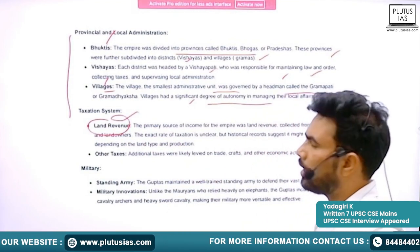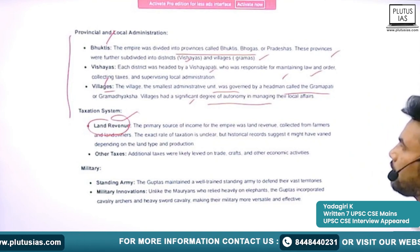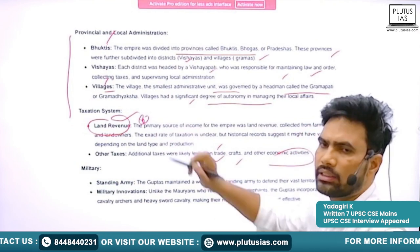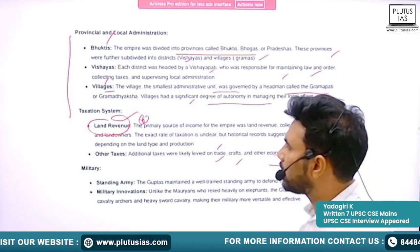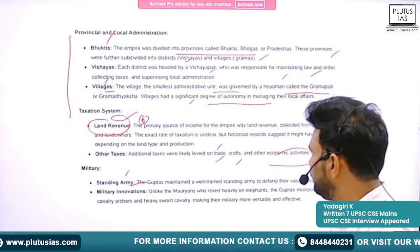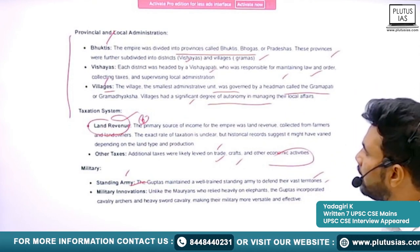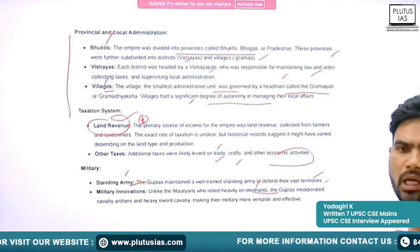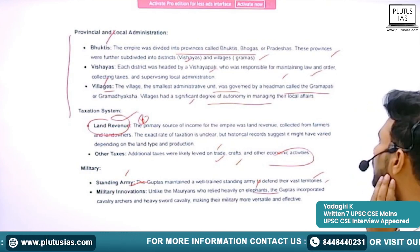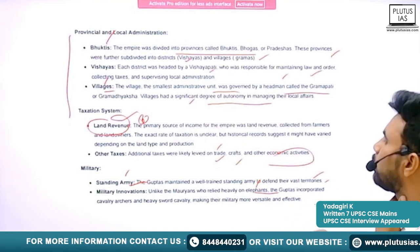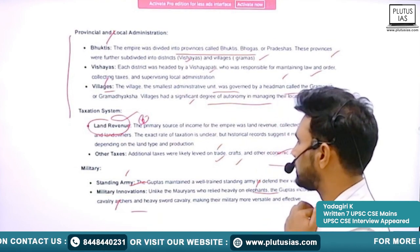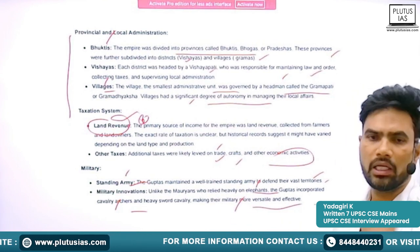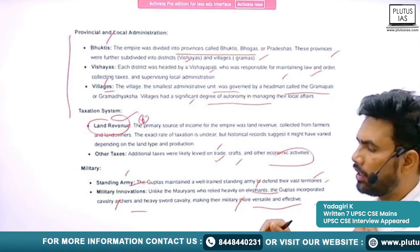Land revenue was the major source of income for the empire. Other taxes were also levied on trade, crafts, and other economic activities. The military had a large standing army. Unlike the Mauryans who were heavily dependent on elephants, the Guptans incorporated cavalry, archers, and heavy sword cavalry into their army, making their military more versatile and effective.